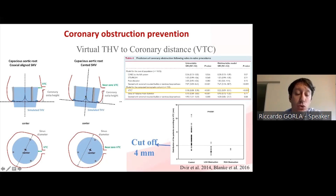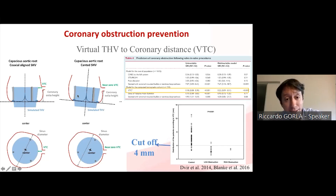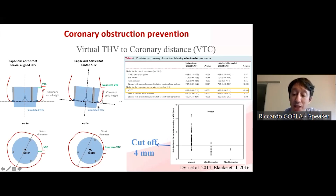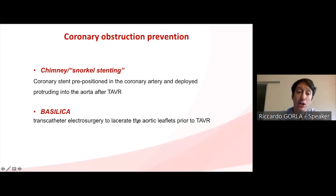It is also important to study the orientation of the surgical valve, because if the prosthetic valve is not coaxial to the aortic root, the distance to the coronary ostia may be smaller, making it a more dangerous situation compared to a coaxial prosthesis.